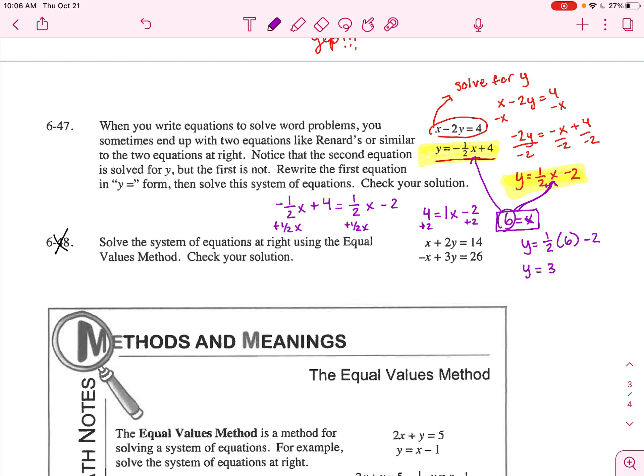Y equals 1 half times 6 minus 2. Well, 1 half of 6 is 3. 3 minus 2. Well, Y equals 1. So really when we solve these problems, we really should be getting two different solutions for the two different variables. And that will come clearer when we graph these because this is where these two lines intersect. So our actual answer is 6 comma 1.